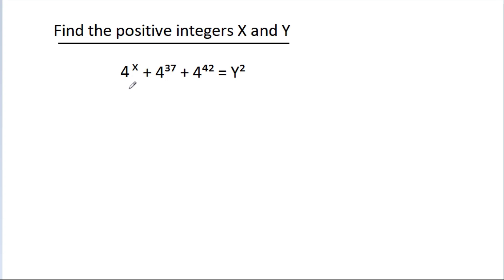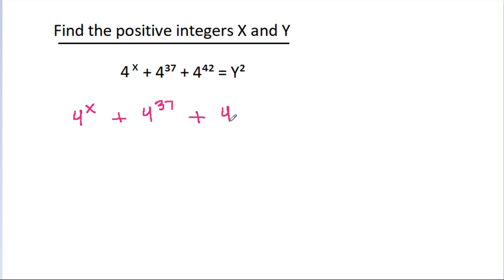In this video, we have been given that 4 power x minus 4 power 37 minus 4 power 42 is equal to y square. Then we have to find positive integers x and y. So we have 4 power x minus 4 power 37 minus 4 power 42 is equal to y square.